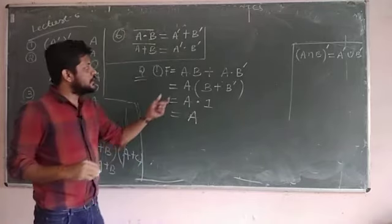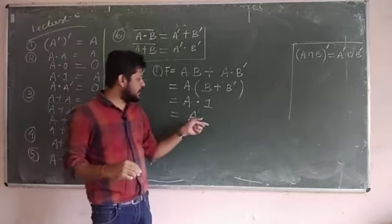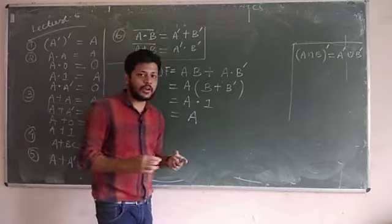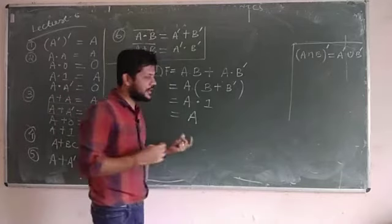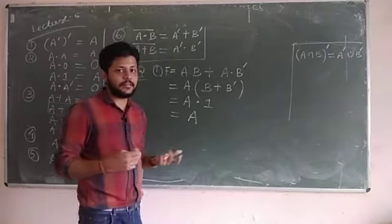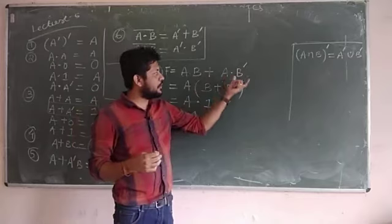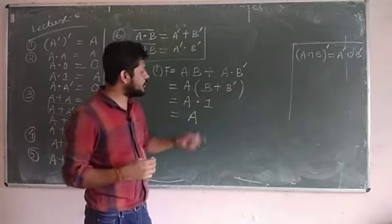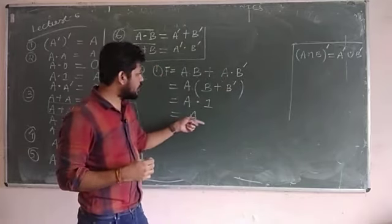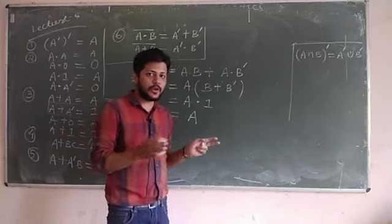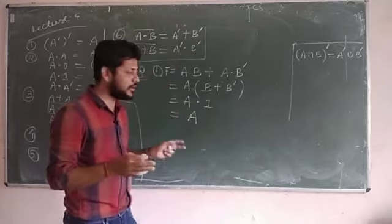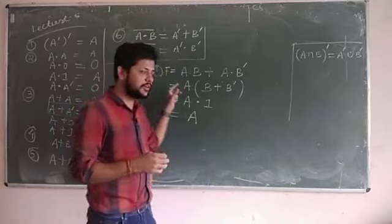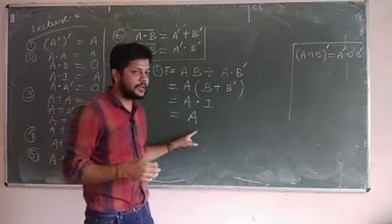So, to implement the original logic required 4 gates, but after simplification, the function F equals A directly — zero gates required. This demonstrates the power of Boolean algebra simplification.